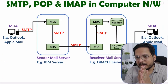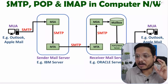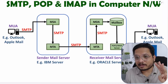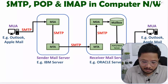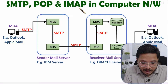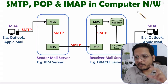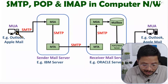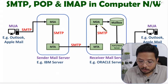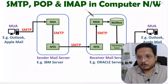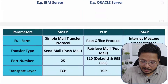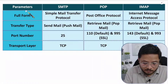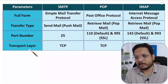Hello friends, welcome to Engineering Funda Family. In this video I'm going to explain three interesting application layer protocols for email services in computer networks. We can have SMTP, POP, and IMAP protocols that we use for email services. First I'll explain a practical example of how email is forwarded from one sender to one receiver using these three protocols, and at last I'll explain a comparison of these three protocols with respect to various parameters.